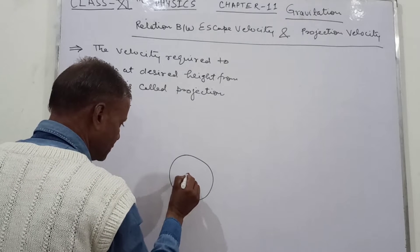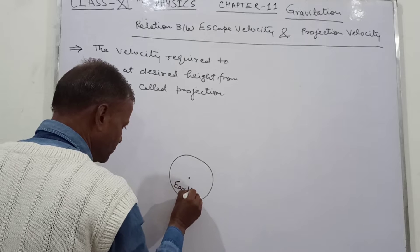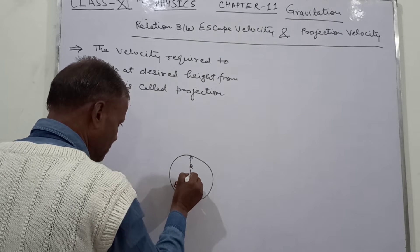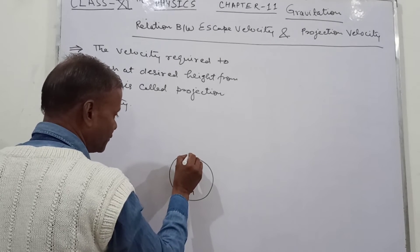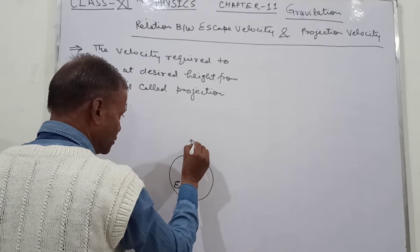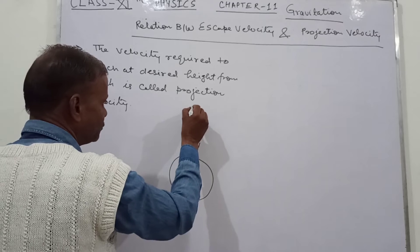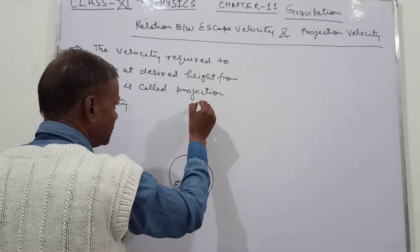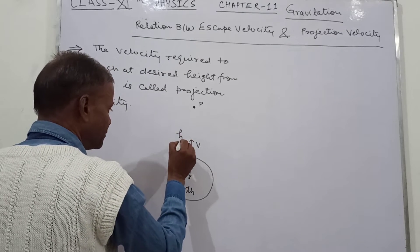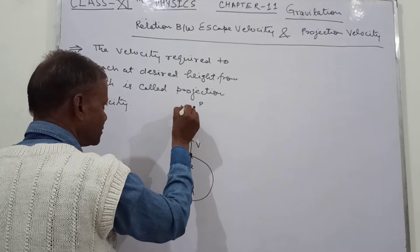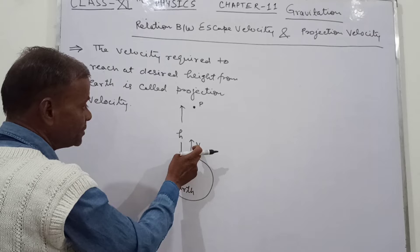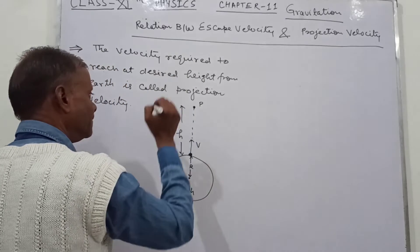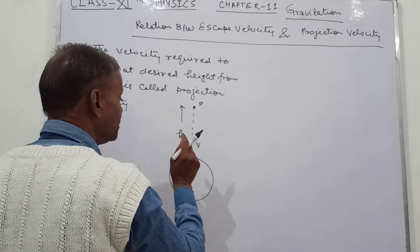Consider this is the Earth, with radius R. The body is projected from point A here and is thrown with some velocity V. It reaches to a point P at height H. At point P, the final velocity is equal to zero.